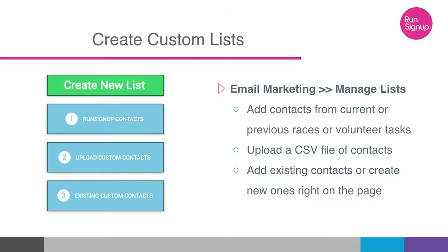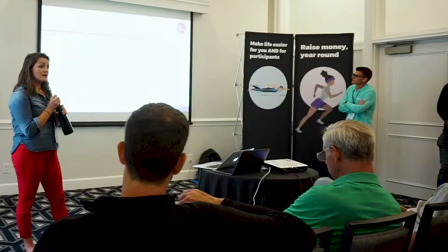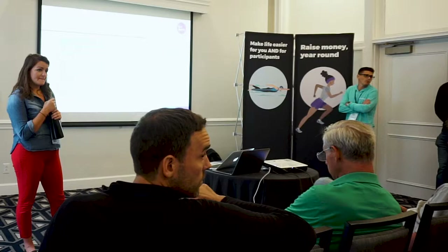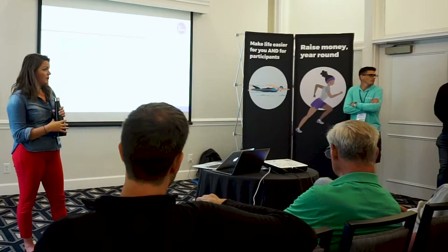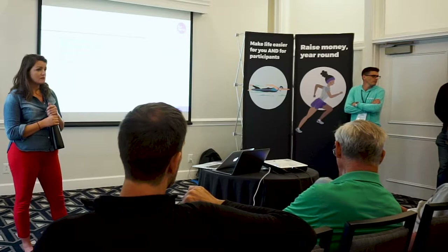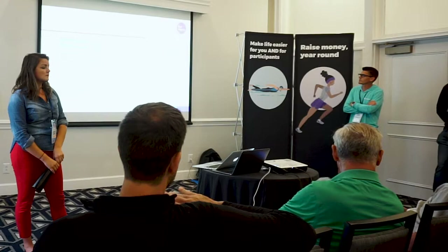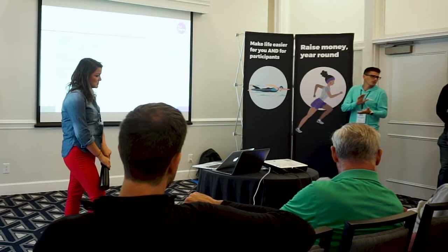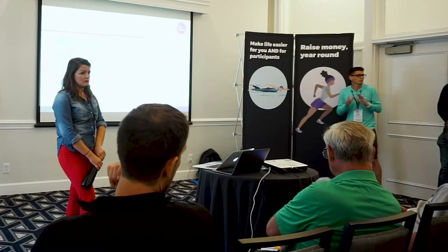Creating custom lists is under Email Marketing > Manage Lists. You have a few options: you can use RunSignup contacts already in the system, or upload your own via a CSV file from another system. We do not require double opt-in when you upload contacts. And to confirm — we do not ever sell, spam, or solicit to your runners. If you have a hundred-thousand-runner list from ten years of race history and you want to put it in RunSignup, it's your data and we're not touching it.